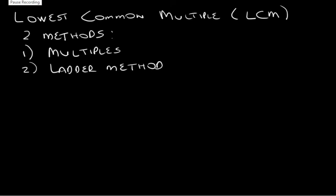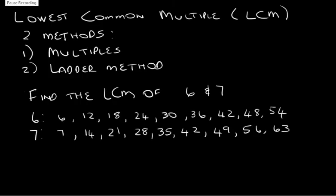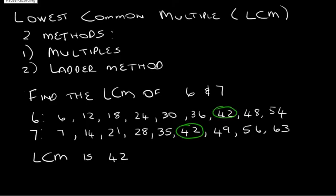Now let's look at the lowest common multiple. Again there are two methods. The first one uses multiples, and the second is the ladder method which we've just used, but with a different step. Let's find the LCM of 6 and 7. This method is more suitable for smaller numbers. I've written down the first few multiples of 6 and of 7, and we look for the lowest common one. The lowest common multiple is 42. So the LCM of 6 and 7 is 42.